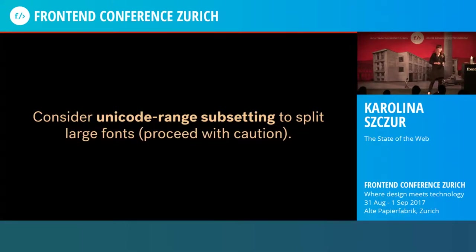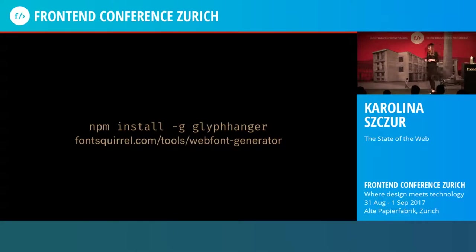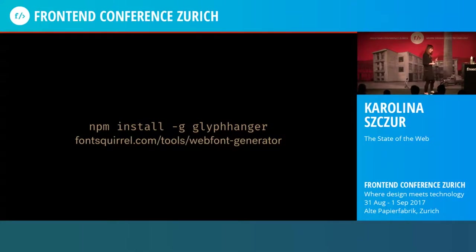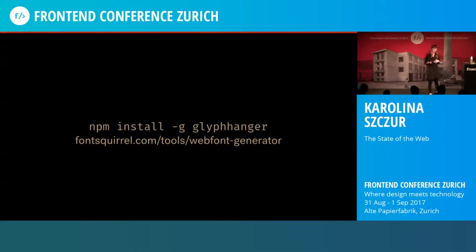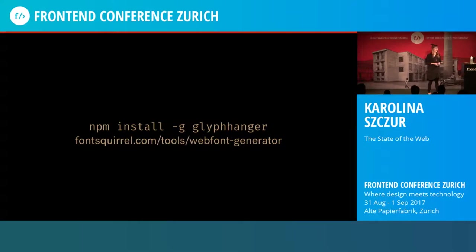This is a pretty advanced technique, but thanks to the Filament Group, they've released an open-source module called Glyphhanger that will analyze URLs provided to it and give you a list of necessary characters needed for subsetting. Alternatively, you can use Font Squirrel, which has an advanced web font generator with subsetting options. If you're using Google Fonts or Typekit, choosing a language subset is trivial — it's right there in their editor. So always make sure you tick the right languages you're trying to support.